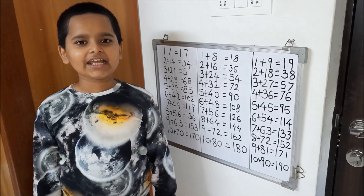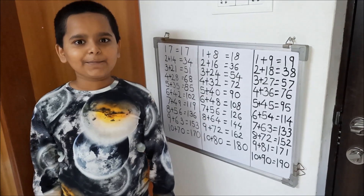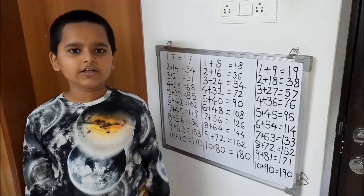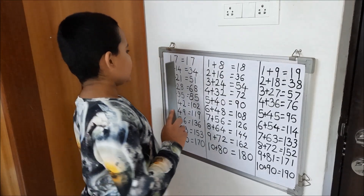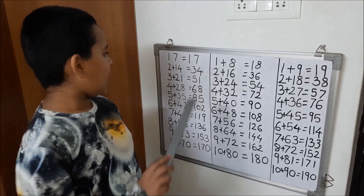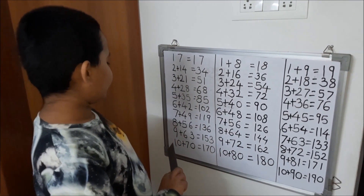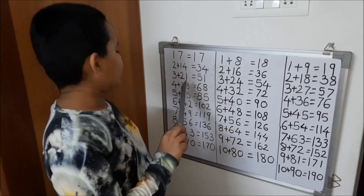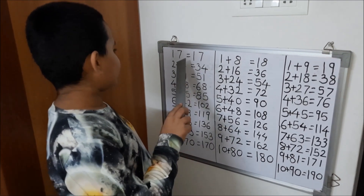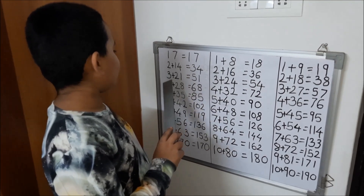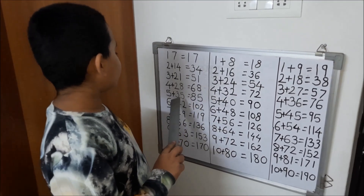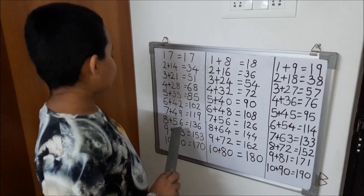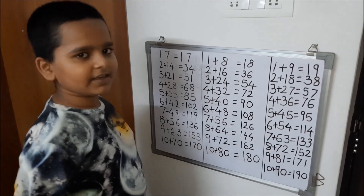By using the same trick, we can write tables of 17, 18, and 19. Now I will show you. For the 17 times table, we have to write 1 to 10 numbers in the left side, and then we have to write the 7 times table in the right side: 7×1 is 7, 7×2 is 14, 7×3 is 21, 7×4 is 28, 7×5 is 35, 7×6 is 42, 7×7 is 49, 7×8 is 56, 7×9 is 63, 7×10 is 70.